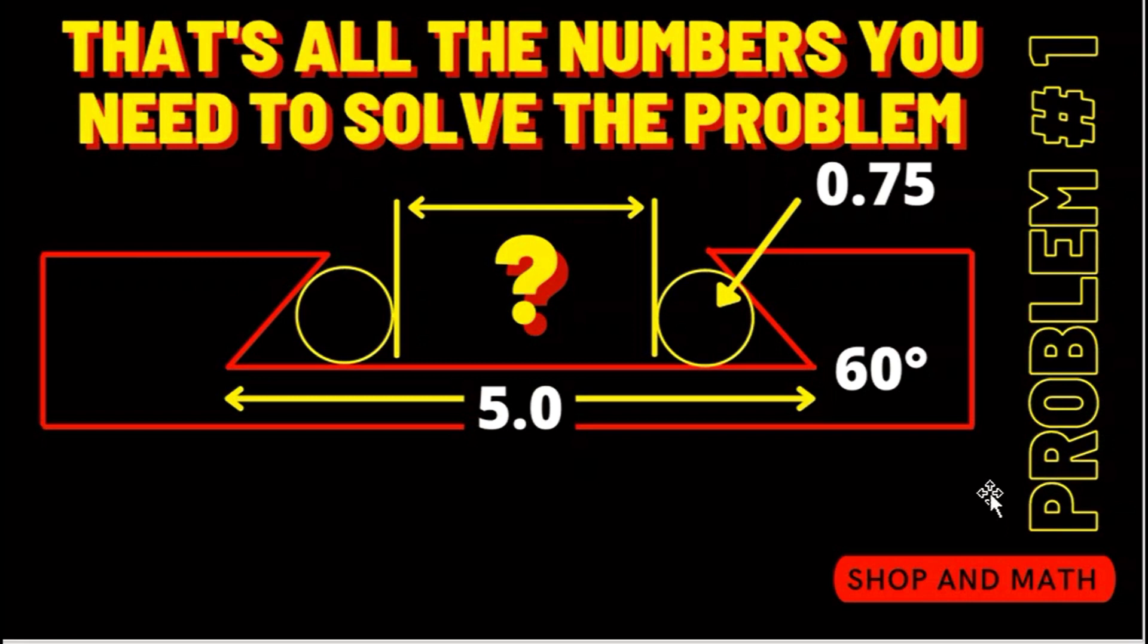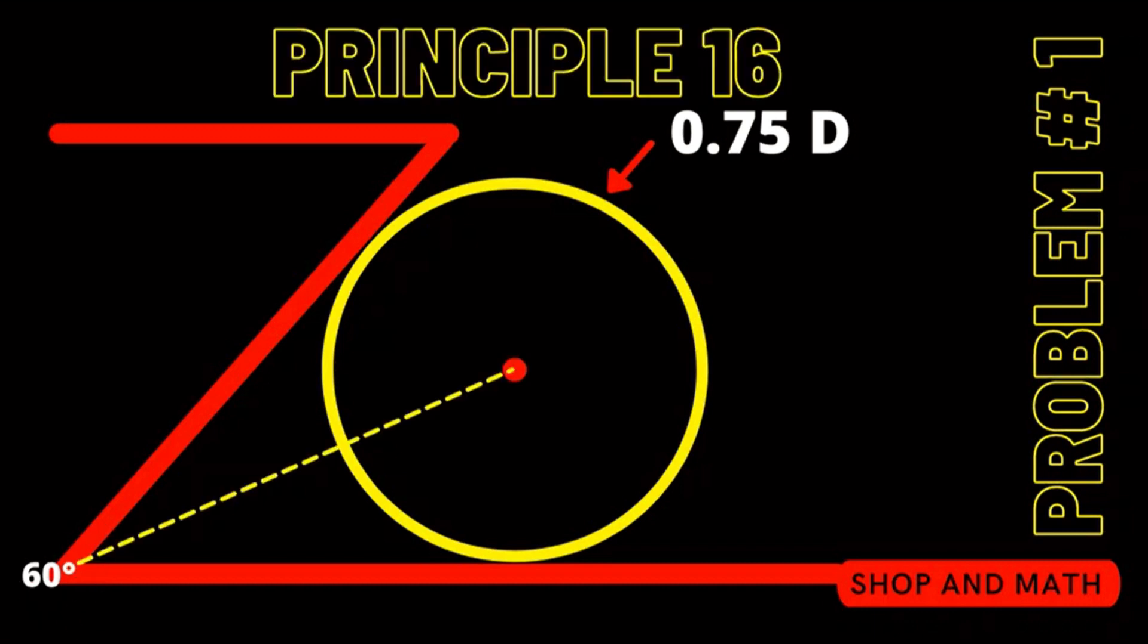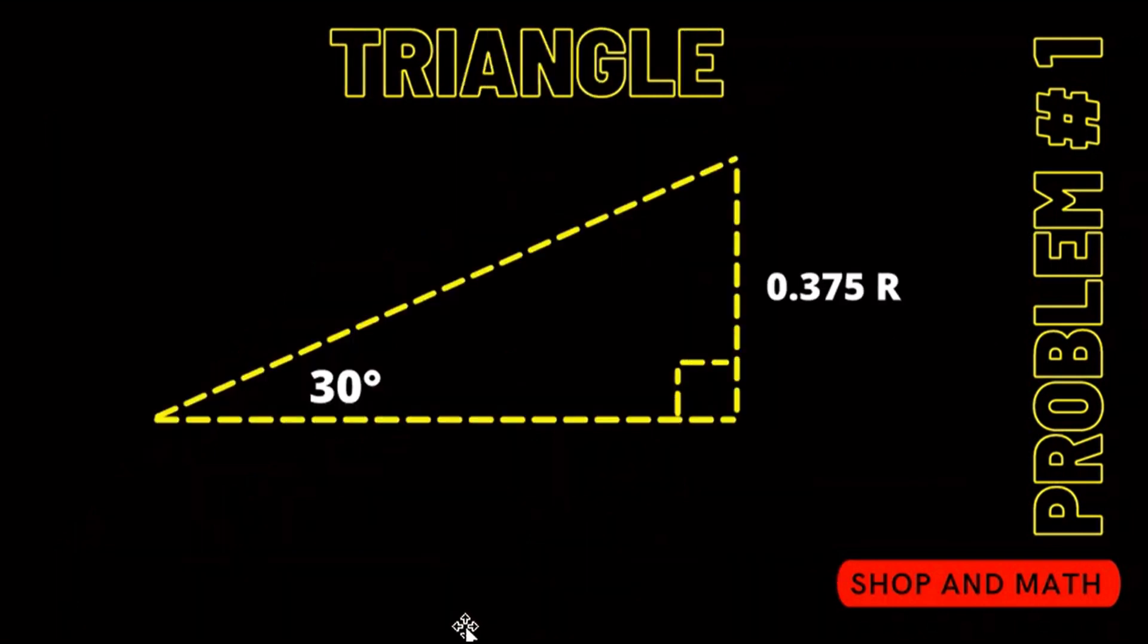Now that we have the numbers let's solve the problem. Okay so we have a three-quarter inch dowel pin. We have a 60 degree here. Let's use Principle 16 to bisect that angle. We're also going to use Principle 15 to draw a line perpendicular to create a 90 degree triangle here. So 60 divided by 2 is going to be 30. We have the diameter. What we want is the radius here. So we're going to divide that in half and we're going to come up with 0.375. So we have our triangle.